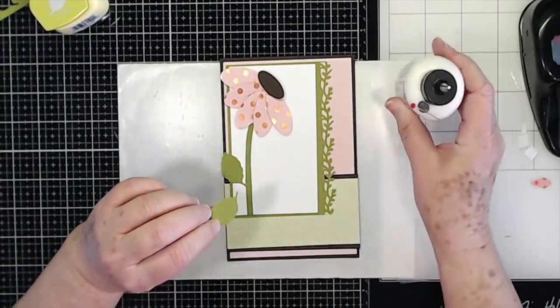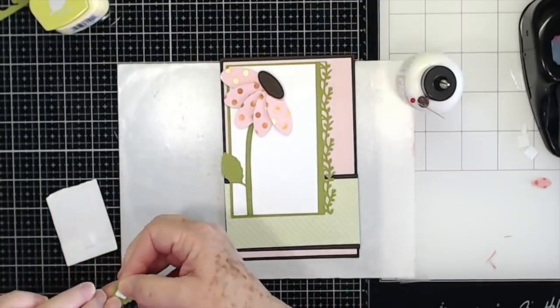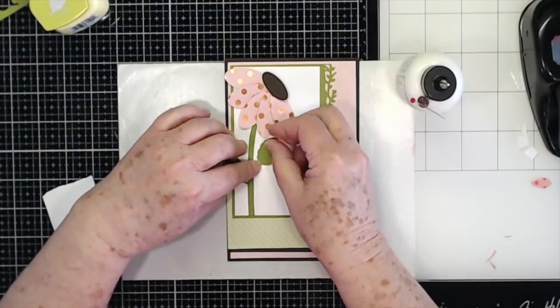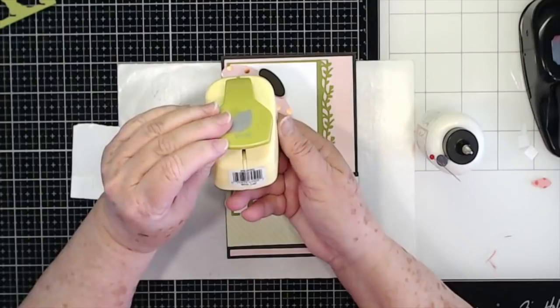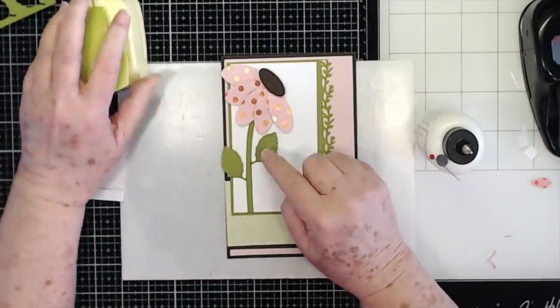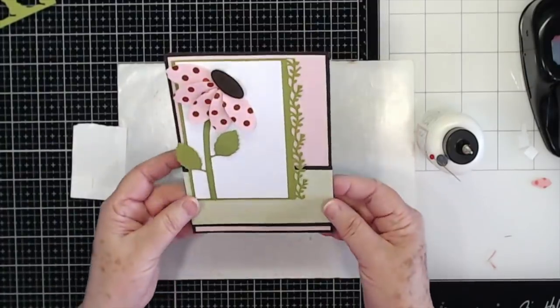And then another one right down there. So we'll just make these up on pop dots too. And these leaves are just cut from this punch, it's called birch leaf. I know this is not a birch tree but we're going to use it.